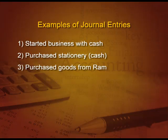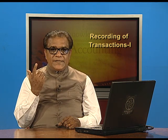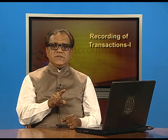Purchase goods from RAM. Here goods are coming in — it is an asset, it will be debited — and who is the giver of these goods? RAM. So he will be credited. The entry will be: purchase account debit, To RAM account. When we purchase goods or sell goods, we write purchase and sales and not goods. When we purchase goods, it is purchase; when we sell goods, it is sales.